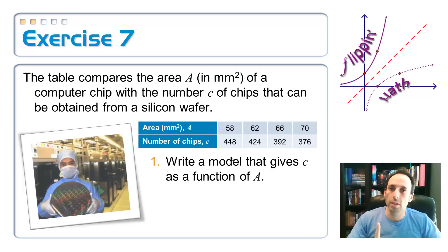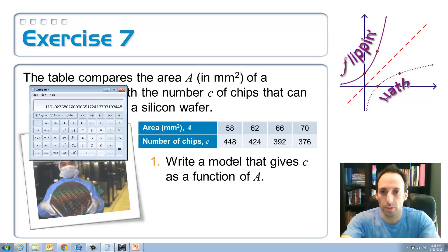One's going up, one's going down. This is an indication it might be inverse variation. To check it, we need to multiply those two things together to see if I get the number that's the same, the constant of variation. Let's pull up this calculator again. And, let's just divide them.